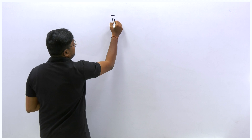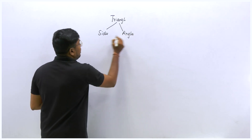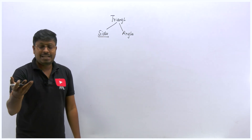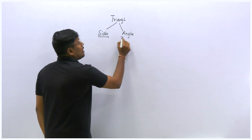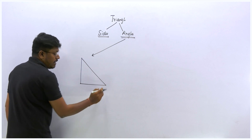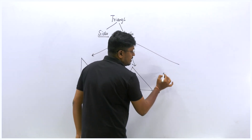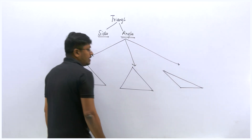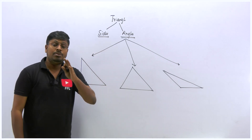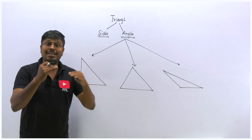In the previous lesson, I explained the different types of triangles based upon sides. We can split triangles into two categories: one based on sides and another based on angles. Based upon sides, we know what is an isosceles triangle and what is an equilateral triangle. If two sides are the same, it is an isosceles triangle; if all three sides are the same, it is an equilateral triangle.